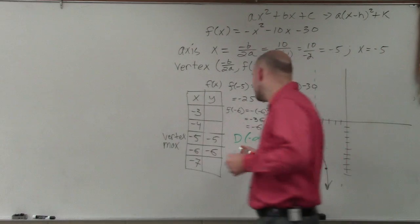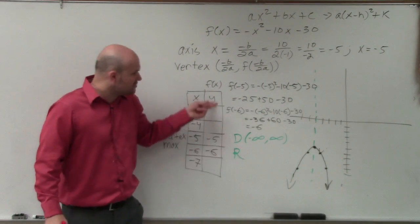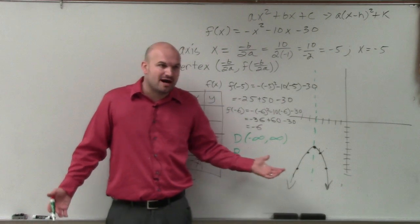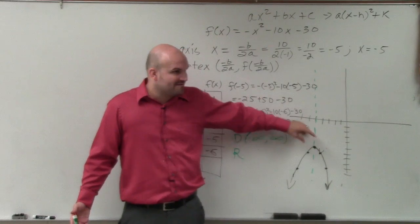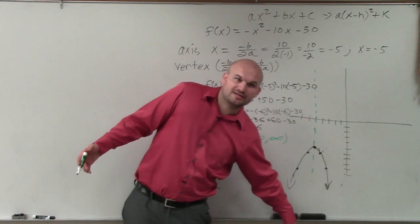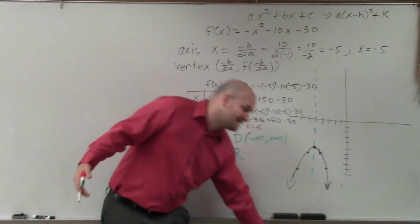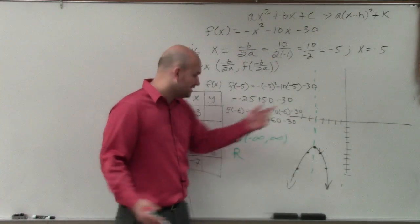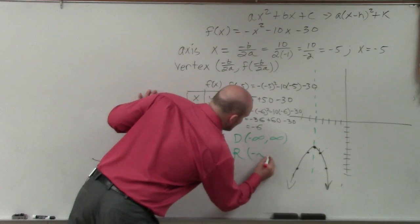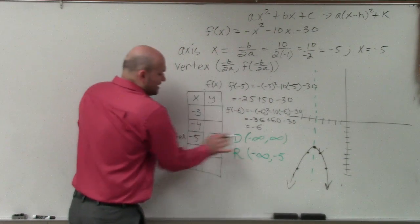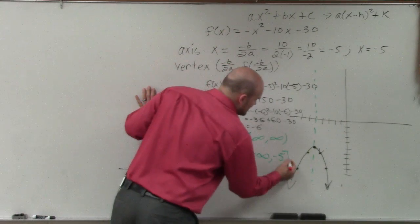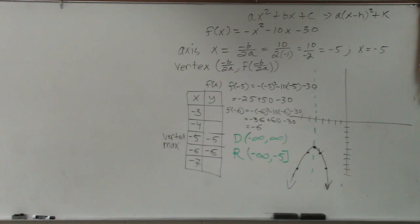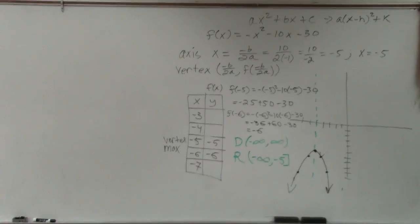However, the range is the set of all y values. So what are all the possible output values that we could get? Well, the best way I like to do is just look at the graph. This graph, the y values, the lowest y value that it's going to go down to is negative infinity. But the highest y coordinate that is on there, you need to look at the vertex, which is negative 5. So we'd say the range is from negative infinity to negative 5. Since negative 5 is actually a y coordinate, we're going to use the bracket. Infinity is not actually a point or a value, so that's why we use parentheses.